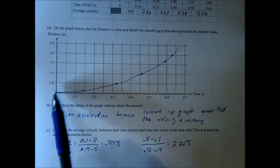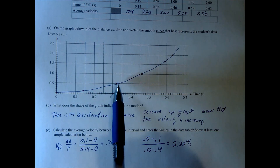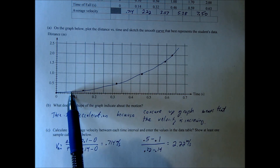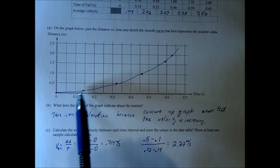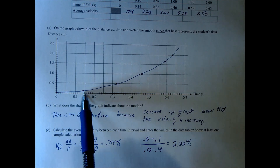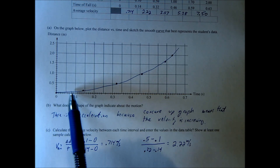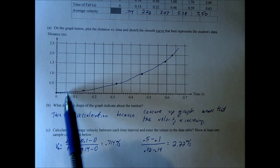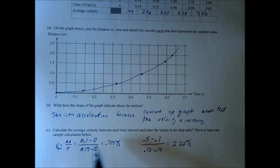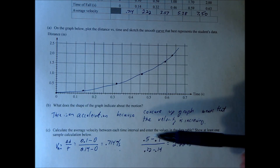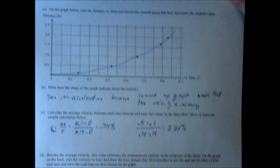What you're finding is the average velocity between two points, which also tells you the instantaneous velocity at that midpoint — essentially the slope of the line connecting those points. So at 0.07 seconds, for example, the instantaneous velocity would be 0.714 meters per second. You'll use that concept for Part D.